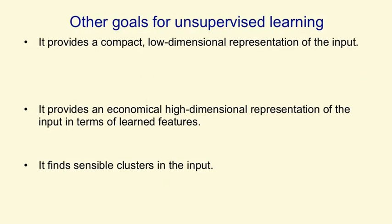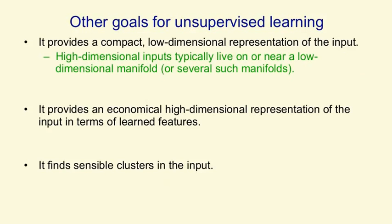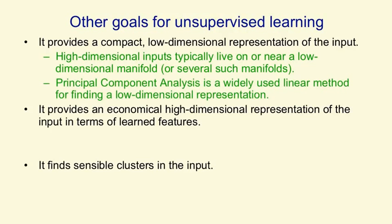Other goals for unsupervised learning are to provide compact, low-dimensional representations of the input. High-dimensional inputs like images typically live on or near a low-dimensional manifold, or several such manifolds in the case of handwritten digits. Even if you have a million pixels, there aren't really a million degrees of freedom — there may only be a few hundred. So we want to move from a million pixels to a representation of those few hundred degrees of freedom, equivalent to saying where we are on a manifold. A very limited form of this is principal components analysis, which is linear and assumes one flat manifold — a plane in the high-dimensional space.